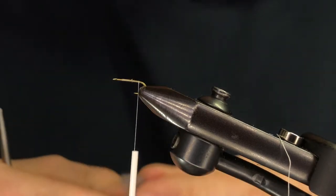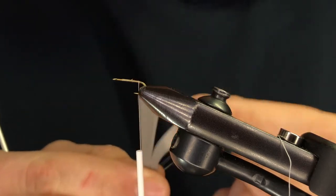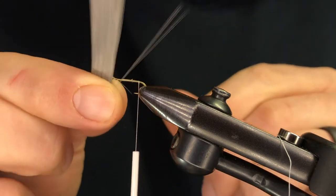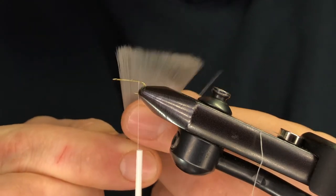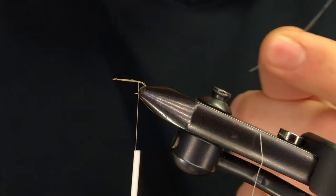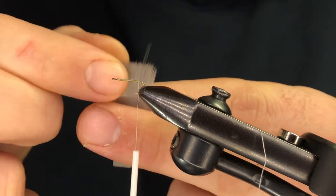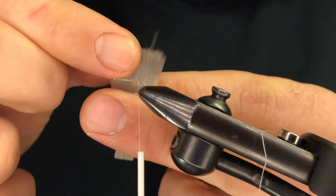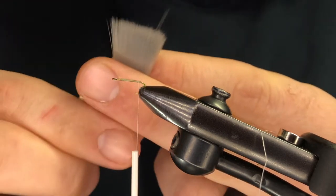We're going to use something here for the tail called microfibits or mayfly tails, however you find them packaged. They look like a small paintbrush pretty much. They give you really fine, really nice tapered tails that you can use on a variety of patterns. You can use this and come up with your own thing as well.